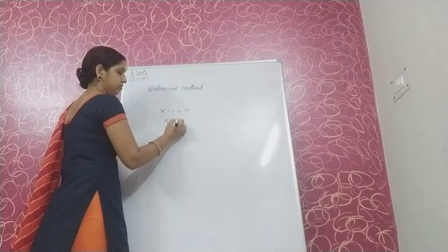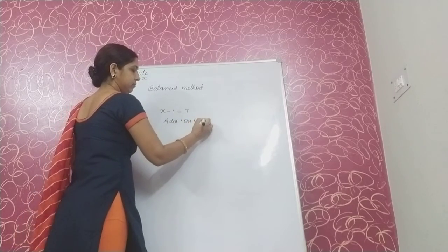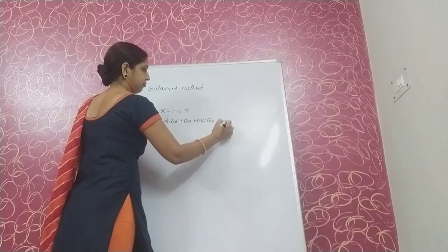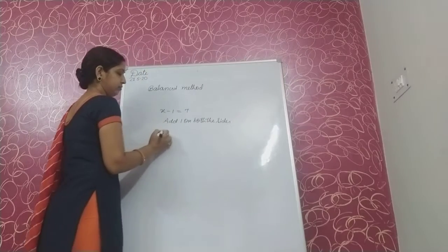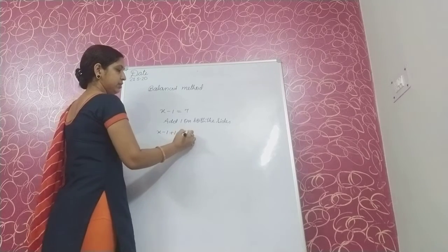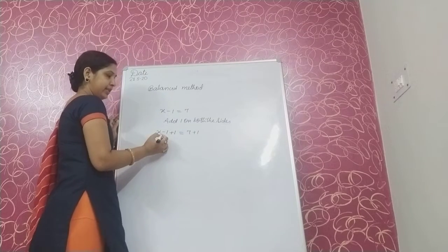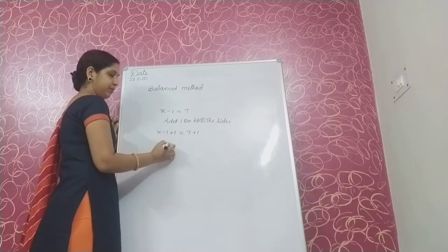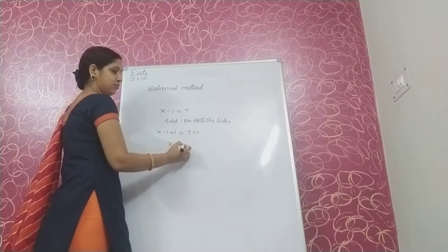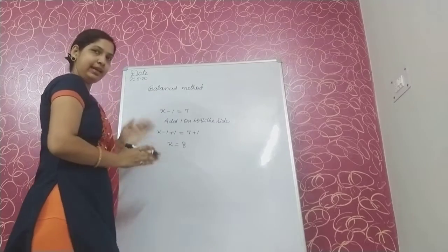Add 1 on both sides. x minus 1 plus 1 is equal to 7 plus 1. x minus 1 plus 1 gives us x on the left side. And 7 plus 1 is 8. So the value of x is 8.